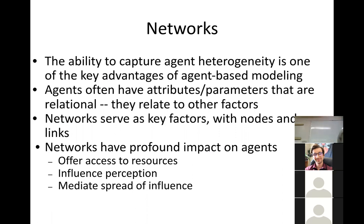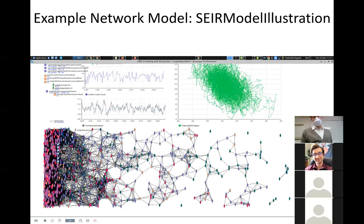Representing networks with an aggregate model is very difficult because we don't represent individuals — we don't represent the nodes. It's hard to capture that; there are ways to approximate it, but it's pretty limited. By contrast, if we have an agent-based model, we can readily represent individuals as nodes — whether they represent people, institutions, community organizations, companies, service dogs, or caregivers — and we can have links between them defined in different ways.